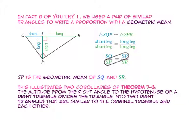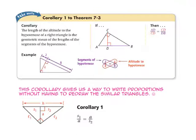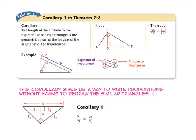This proportion illustrates two corollaries of theorem 7-3. The altitude from the right angle to the hypotenuse divides the triangle into two right triangles similar to the original and to each other. Corollary 1 to theorem 7-3 states: the length of the altitude to the hypotenuse of a right triangle is the geometric mean of the lengths of the segments of the hypotenuse. This corollary gives us a way to rewrite proportions without having to redraw the similar triangles, so side 1 to A equals A to side 2, where A is the altitude and the extremes are the two segments of the hypotenuse.